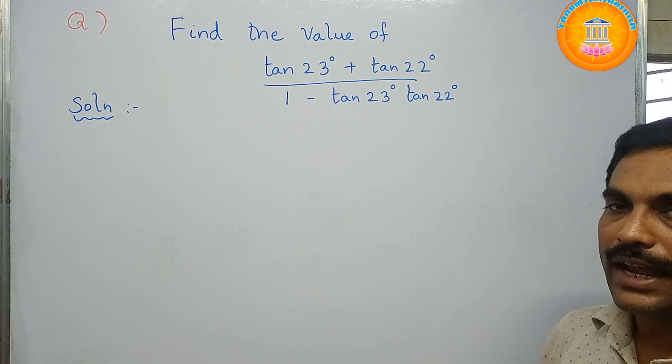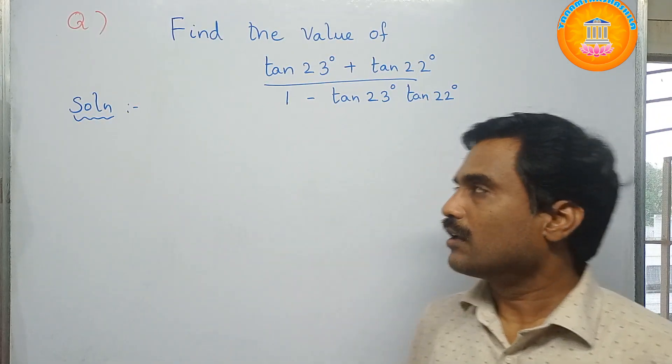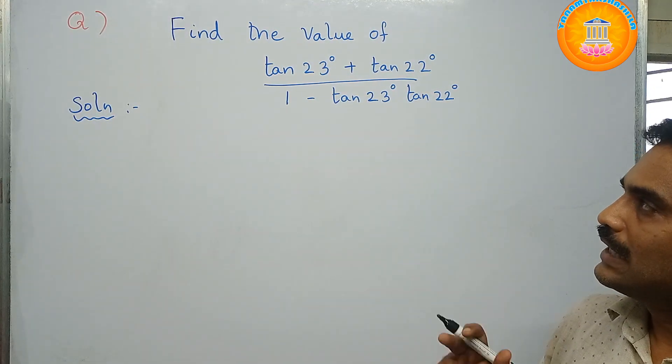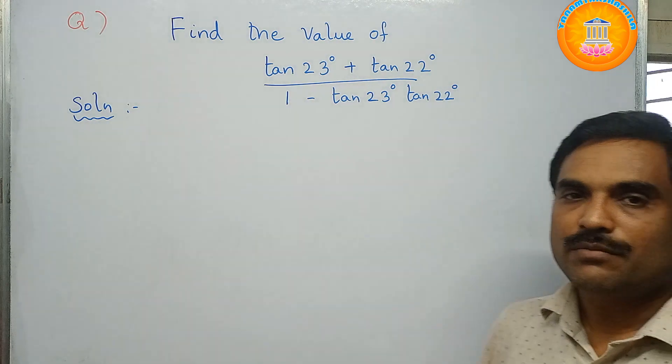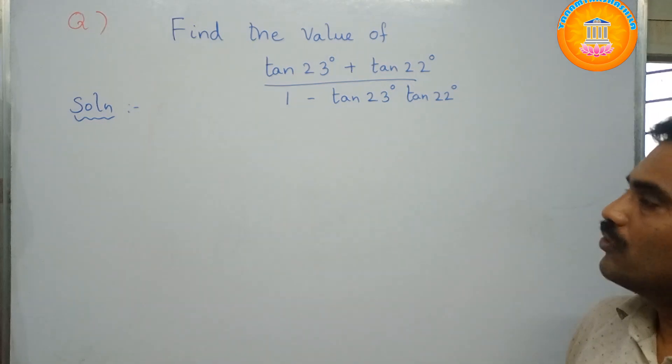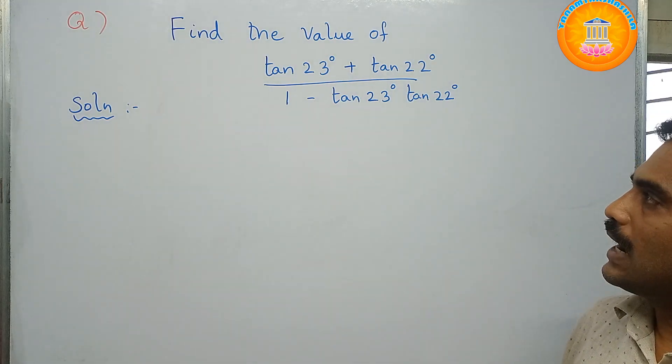Now to solve this problem, you need to apply the trigonometric formula. So if you observe this problem here, the problem is of the form tan 23 degrees, that means you have to take 23 degrees as some A and 22 degrees as B. Then this looks like tan A plus tan B by 1 minus tan A tan B.